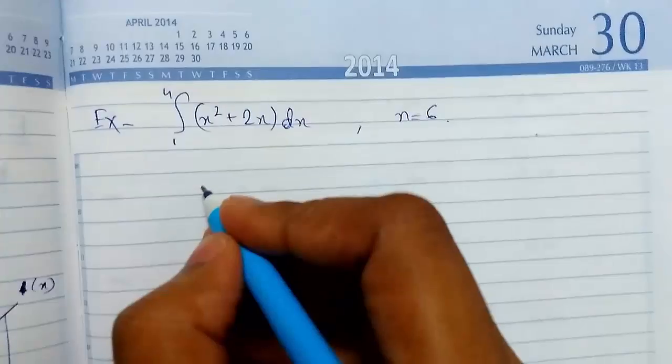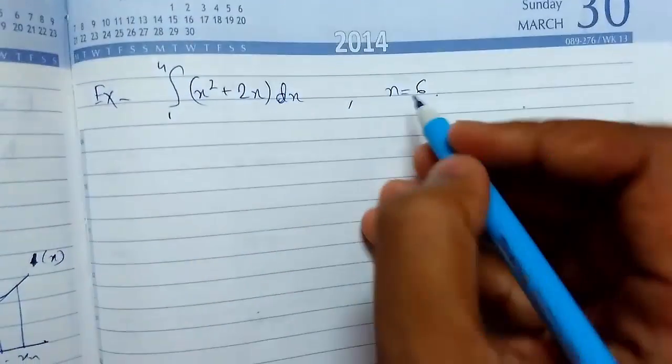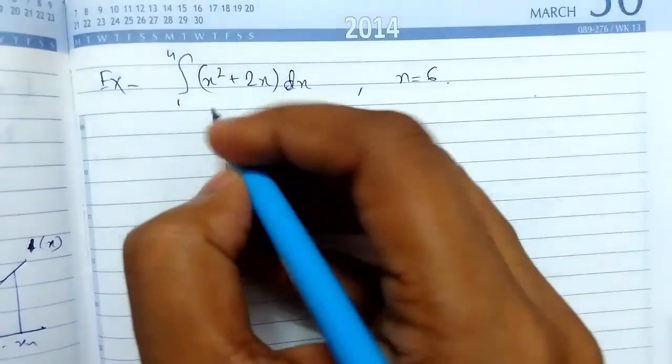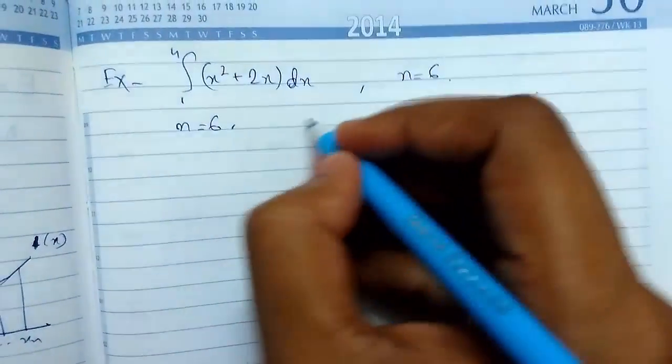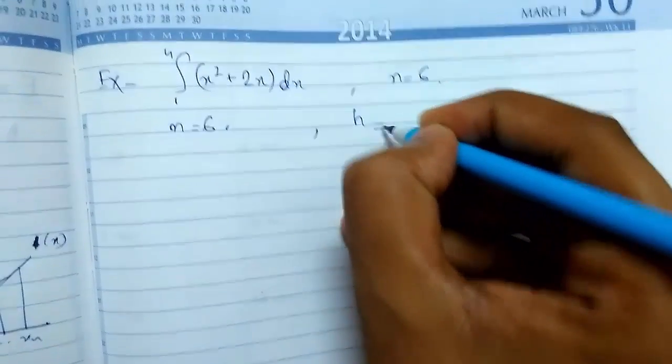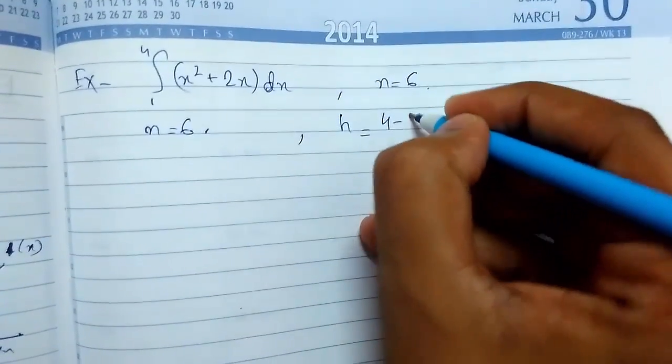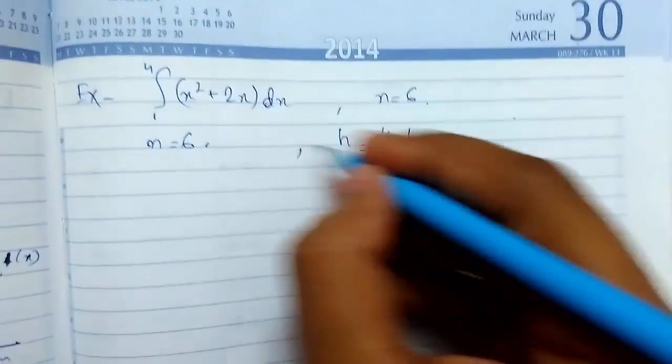Now let me show you a small example. Suppose you need to evaluate this integration and the number of intervals is 6. Step 1: n = 6. Step 2: We need to find h. h = (upper limit - lower limit) / number of intervals. This equals 0.5 or half.